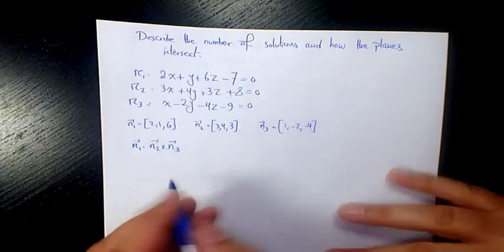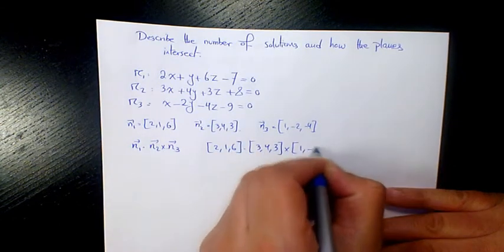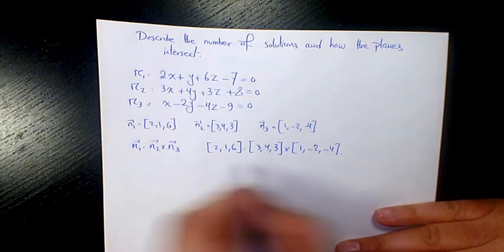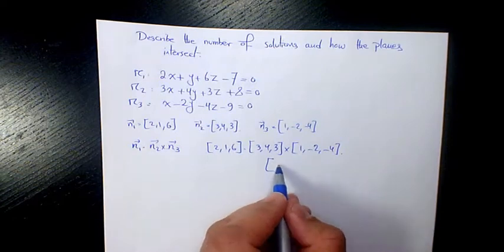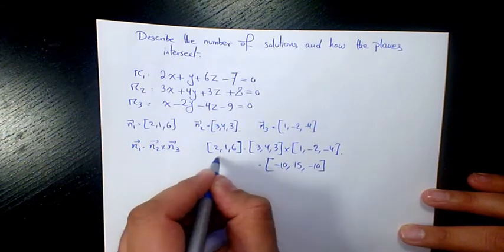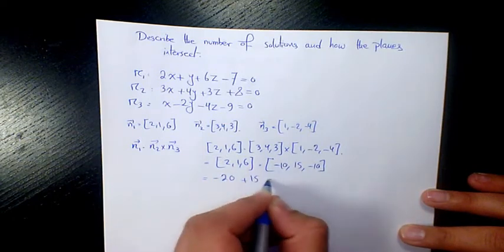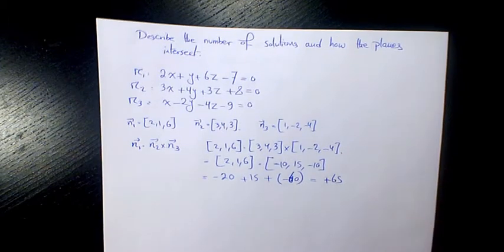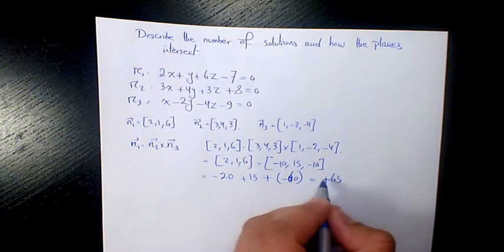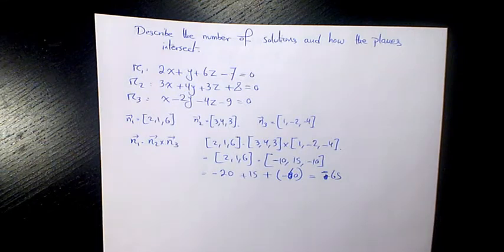We compute (2, 1, 6) dot [(3, 4, 3) cross (1, -2, -4)]. The cross product gives (-10, 15, -10). Then the dot product is 2 times negative 10, plus 1 times 15, plus 6 times negative 10, which equals negative 20 plus 15 minus 60 equals negative 65. Since it is not equal to zero, the normals are not coplanar, and the planes intersect at exactly one single point.